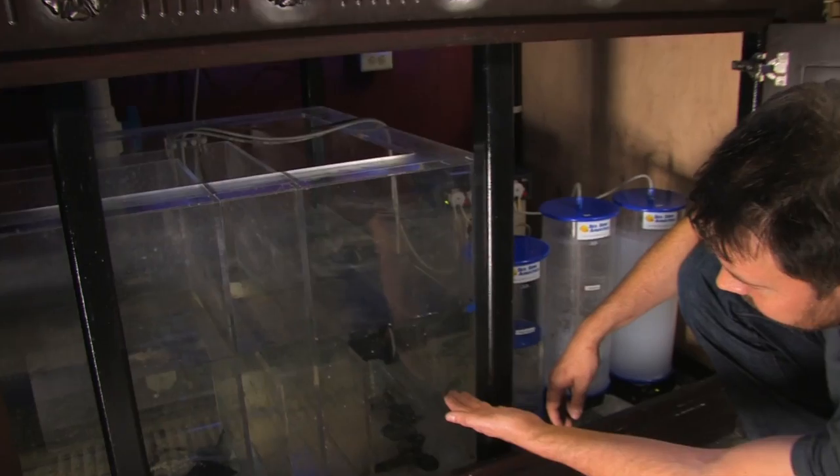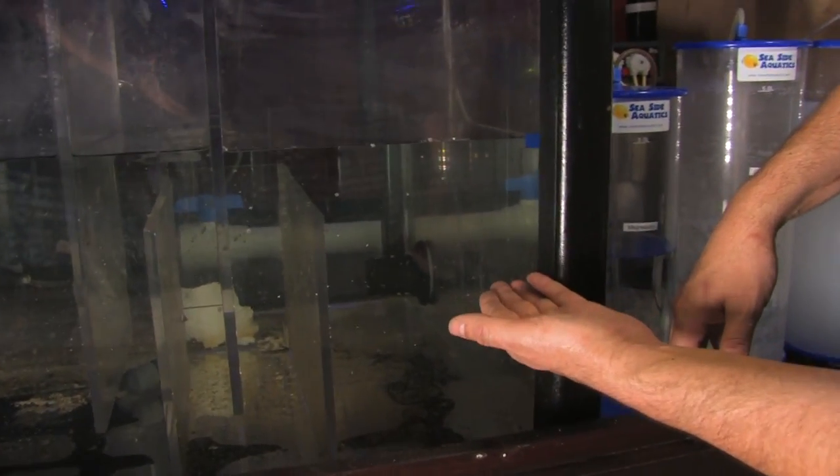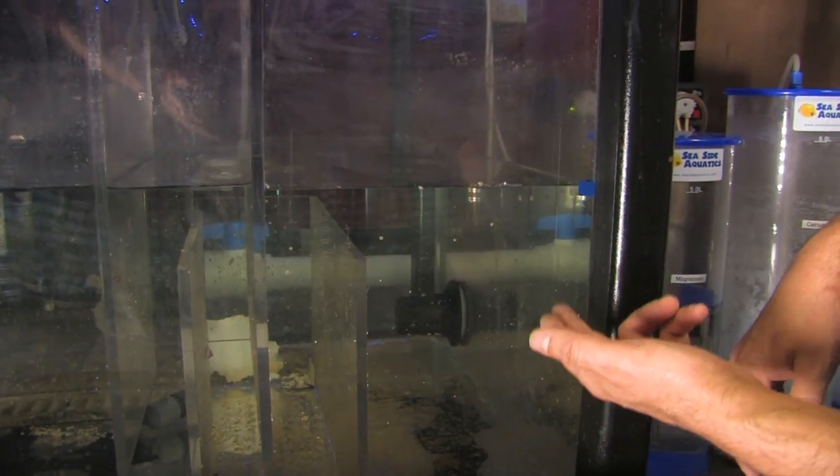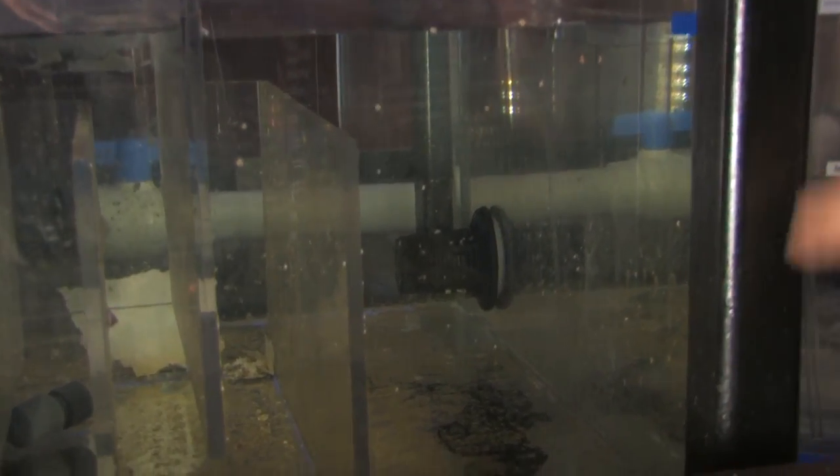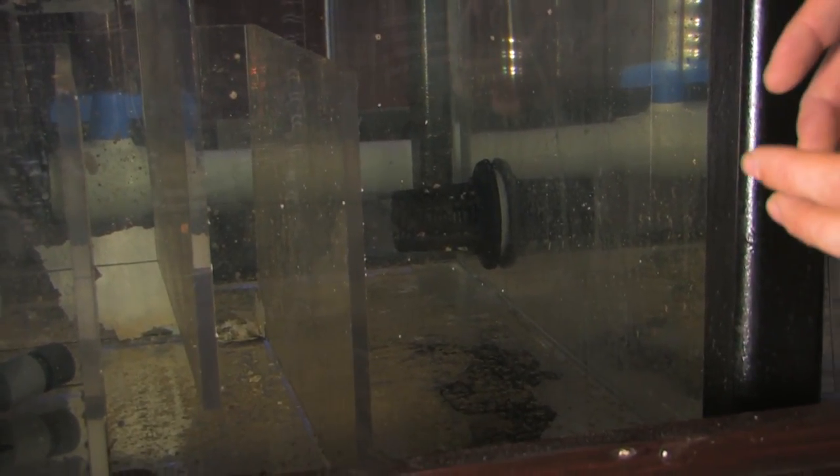You'll notice towards the back of the sump here, you'll see the intake screen and a two inch bulkhead. That's the intake for our return pump. In a minute we'll walk behind the tank and show you the return pump. But now I want to look over here at our dosing pump.